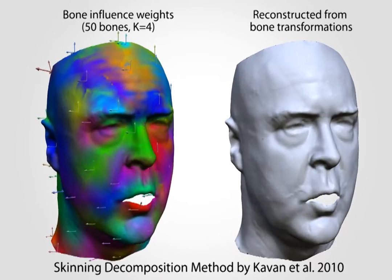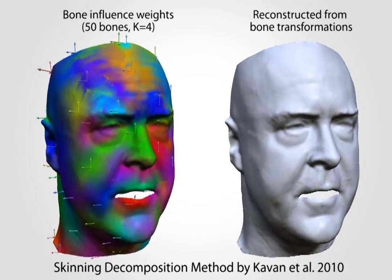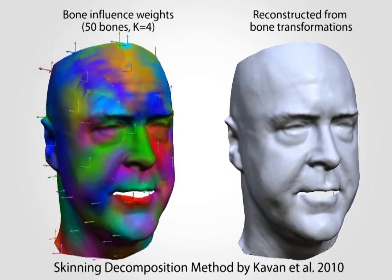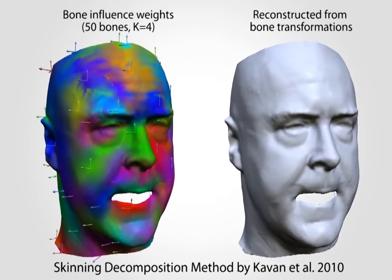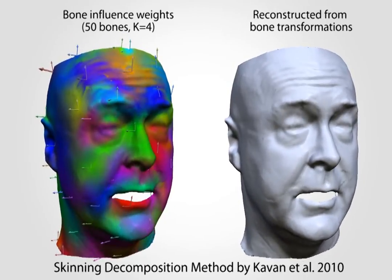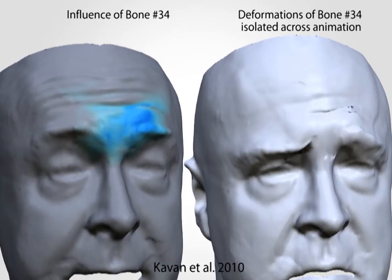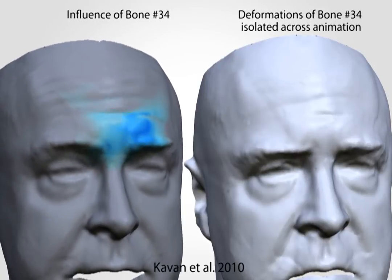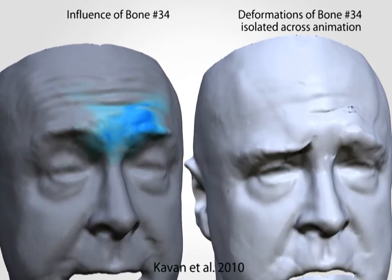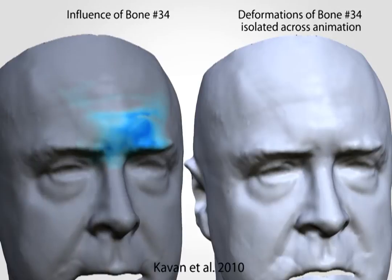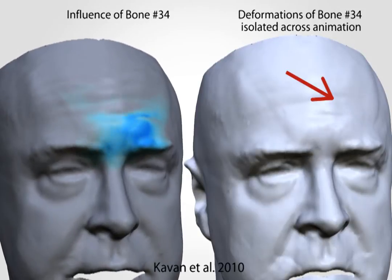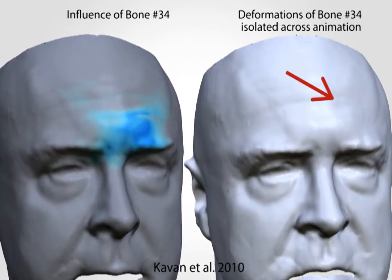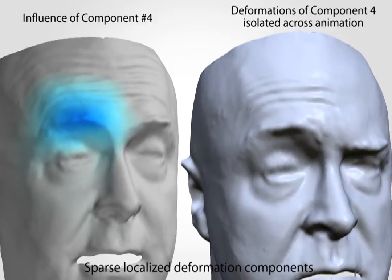Skinning decomposition methods fit bone transformations to the animation. However, the bones themselves are not suitable for individual control. Here, we try to visualize this: we stop all but one individual bone from moving. The only bone still moving cannot generate a meaningful deformation on its own.